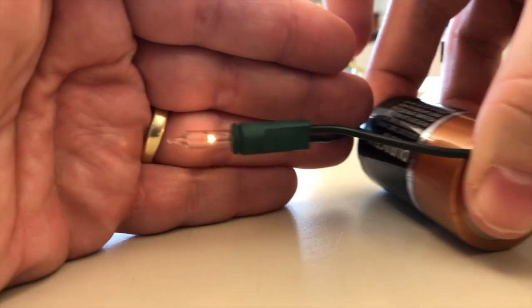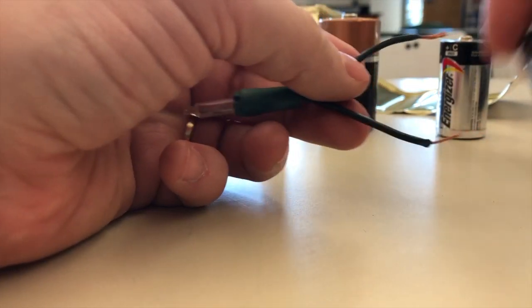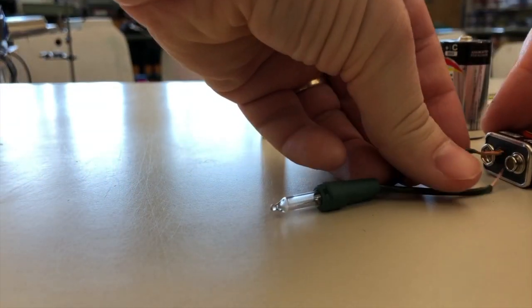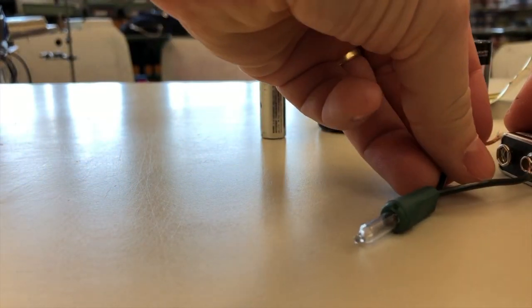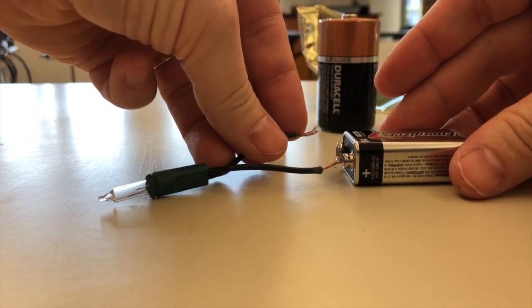Remember how dim the holiday bulbs were when we lit them with the double A and the D cells? Well check this out: when I use the 9 volt battery it is very bright because every charge is dropping off of nine bleachers instead of one and a half bleachers. This brightness won't last very long though, only about 90 minutes. Quad A's are very small and don't contain a lot of acid.